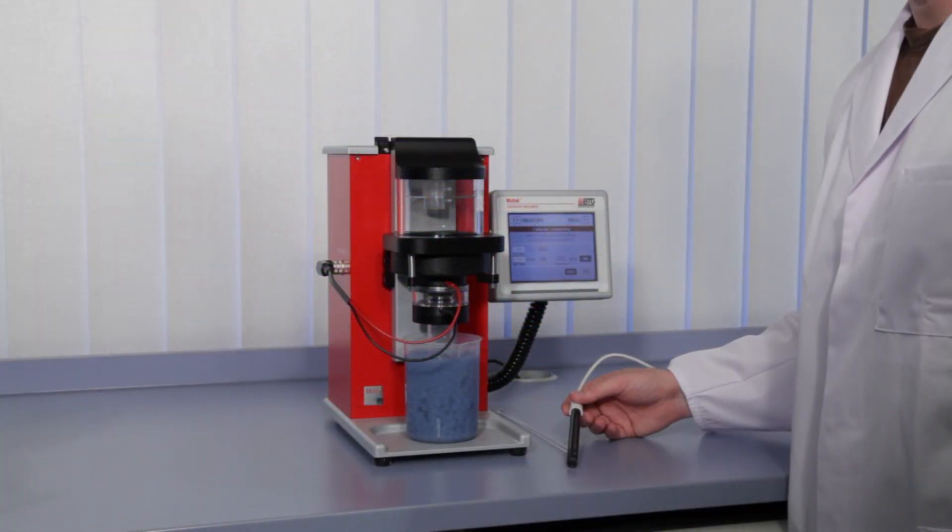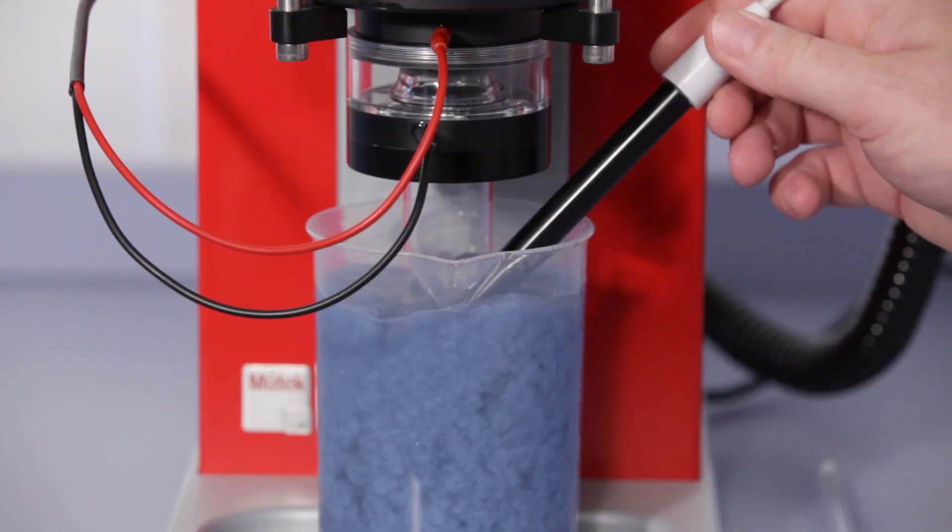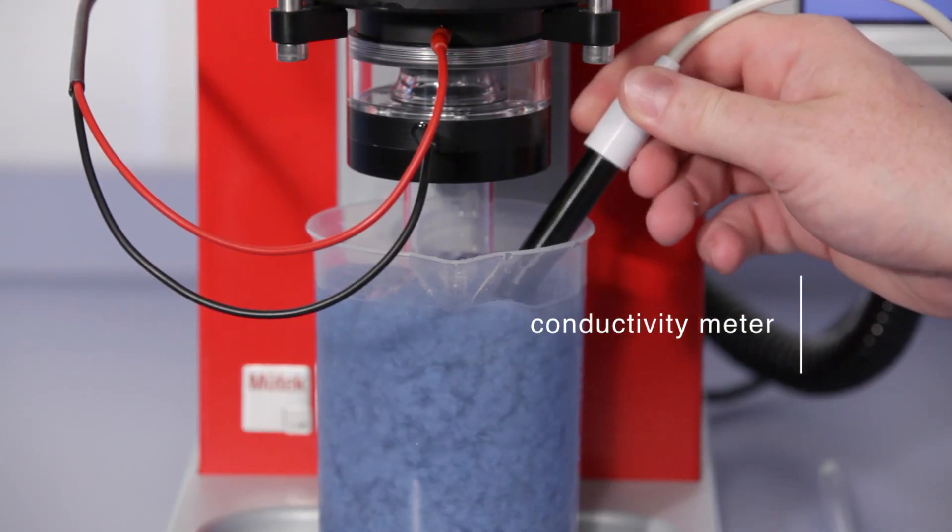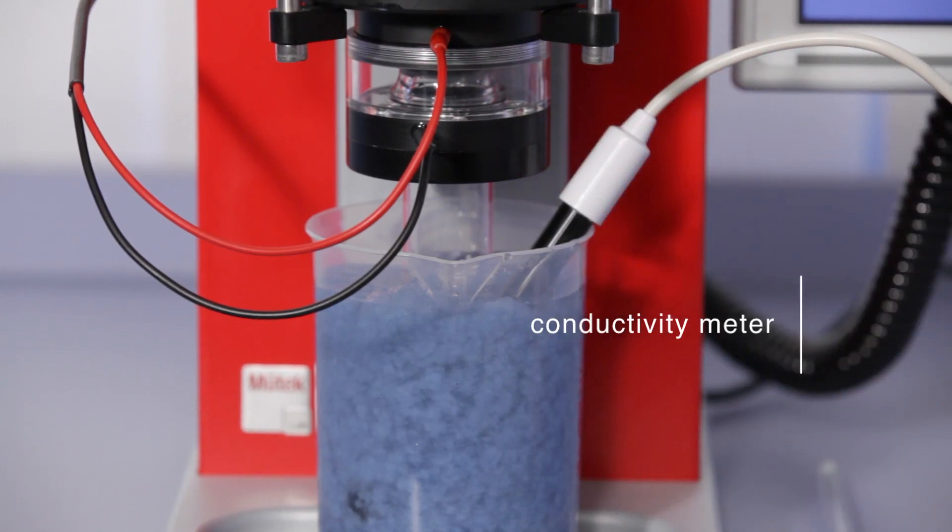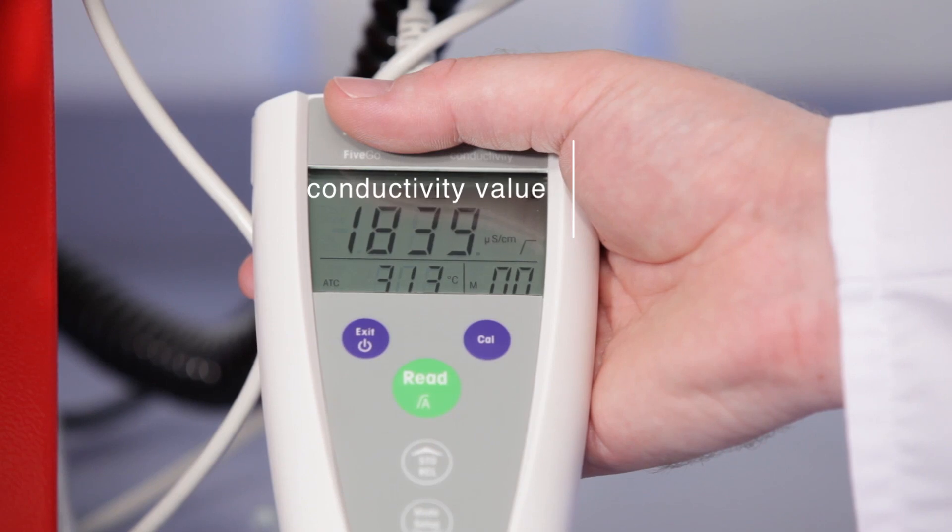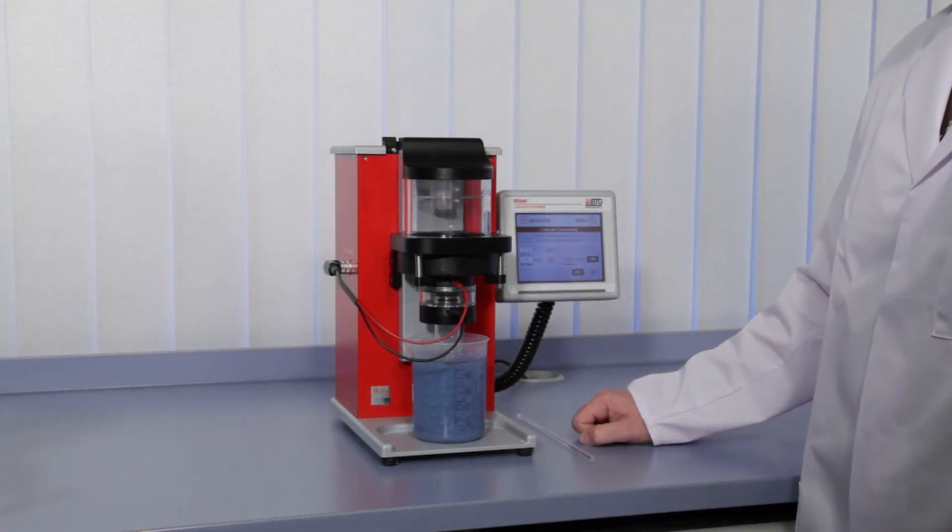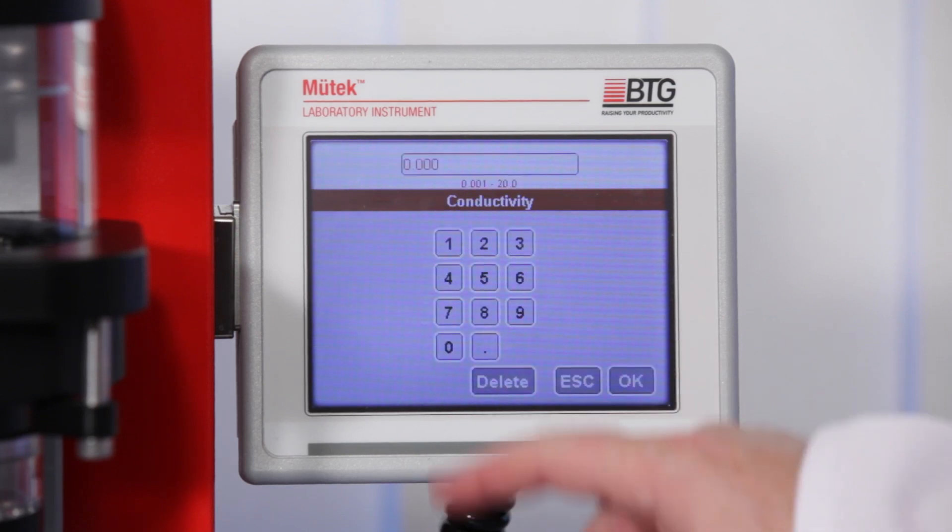Now, an external reference value for conductivity is required. Use a calibrated conductivity meter with the temperature compensation switched off. Note this conductivity value and type it into the conductivity field.